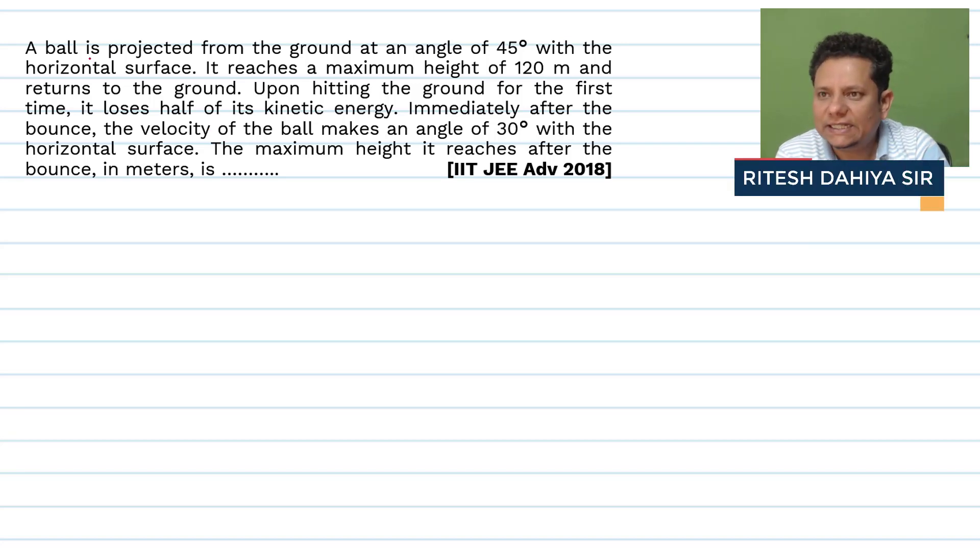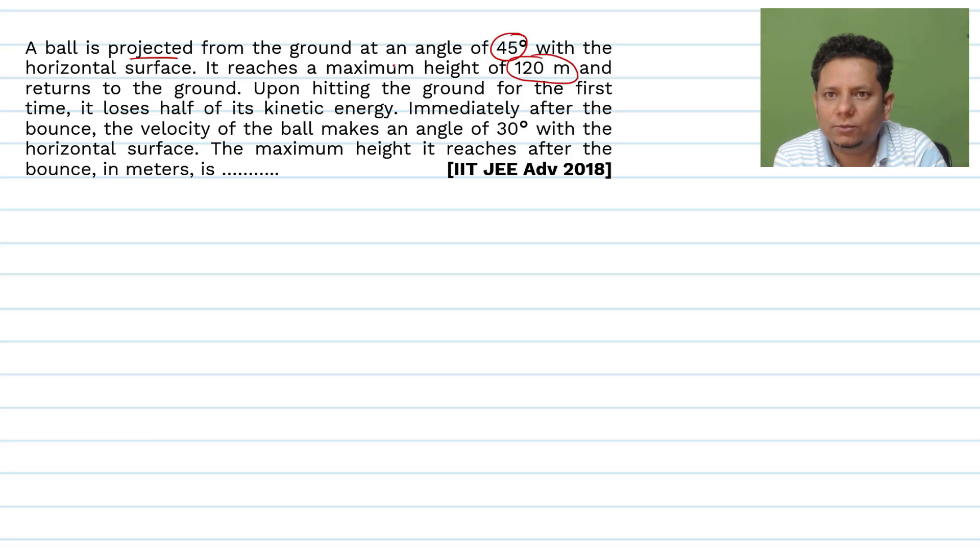Alright, next question. The question says a ball is projected from the ground at an angle of 45 degrees with the horizontal surface. It reaches a maximum height of 120 meters and returns to the ground.